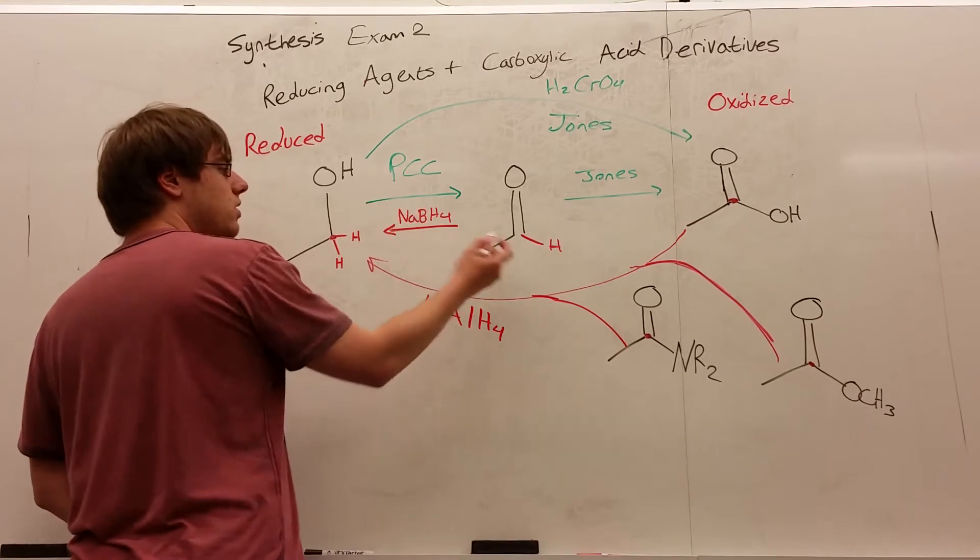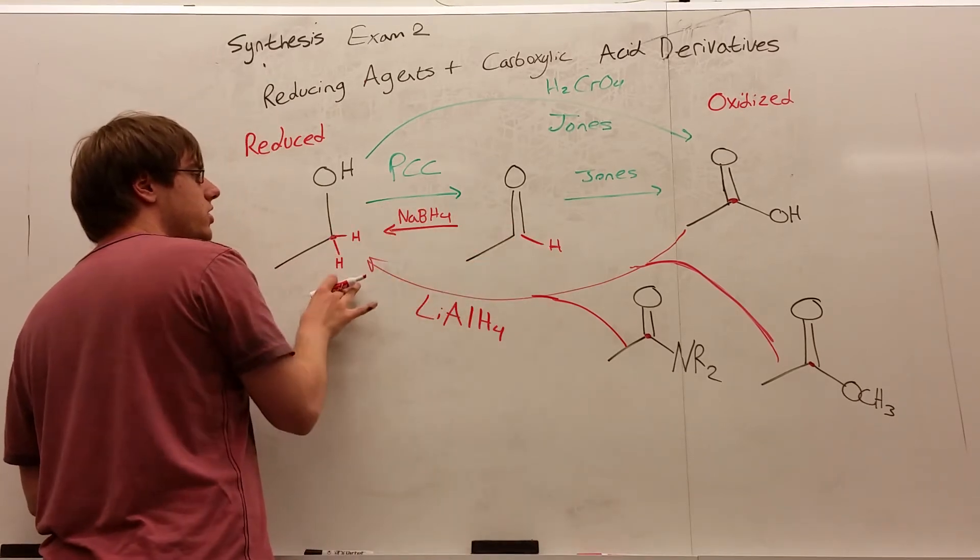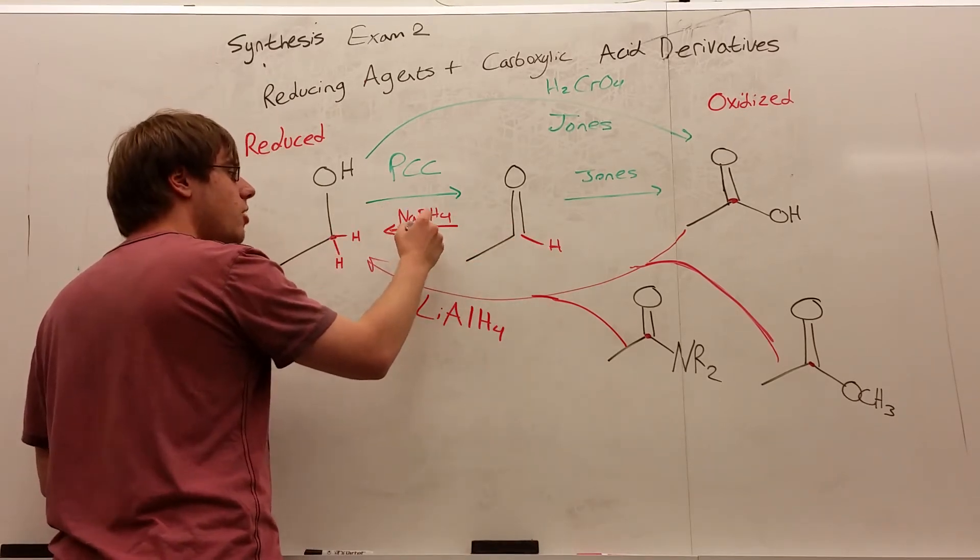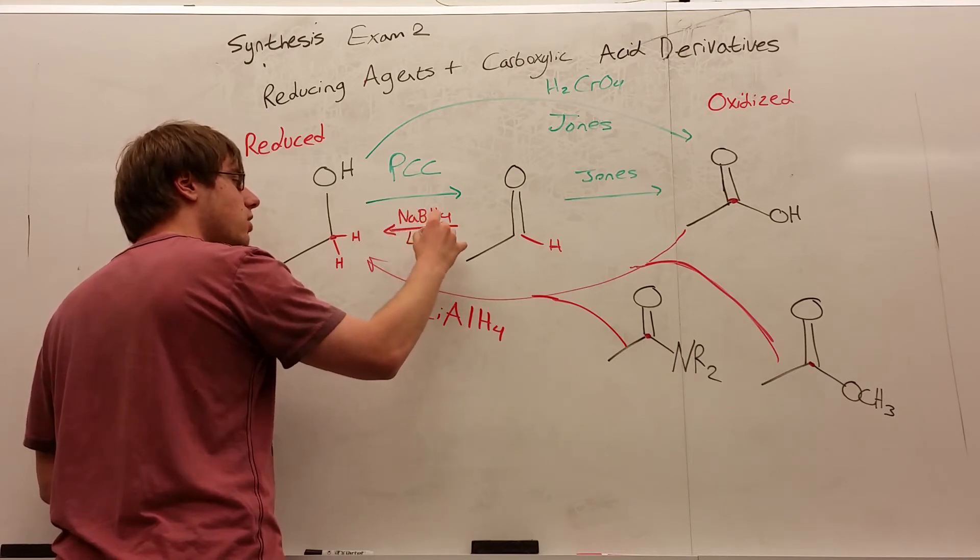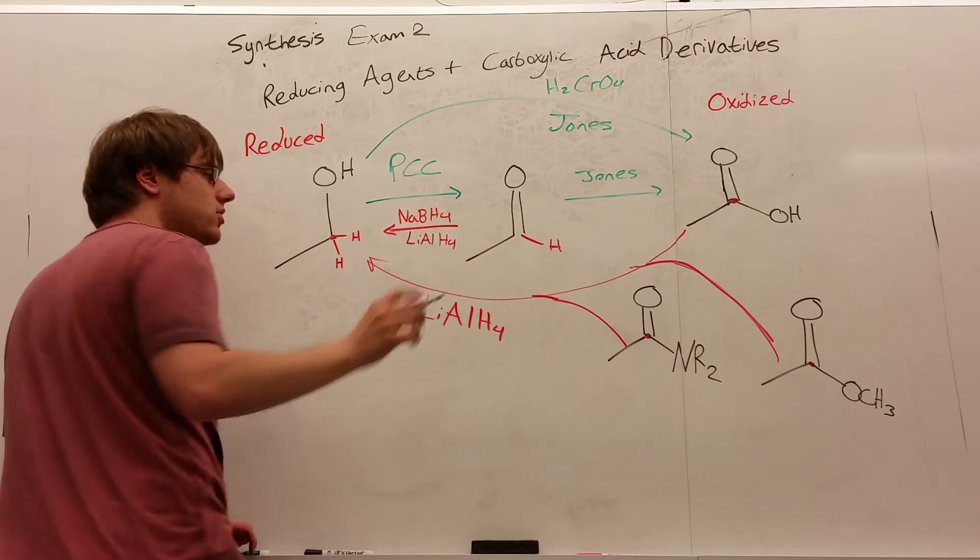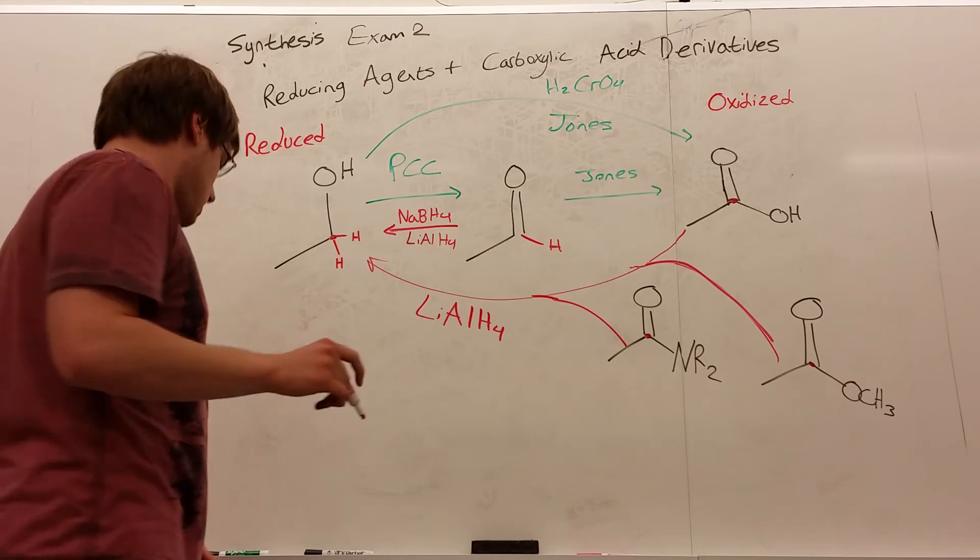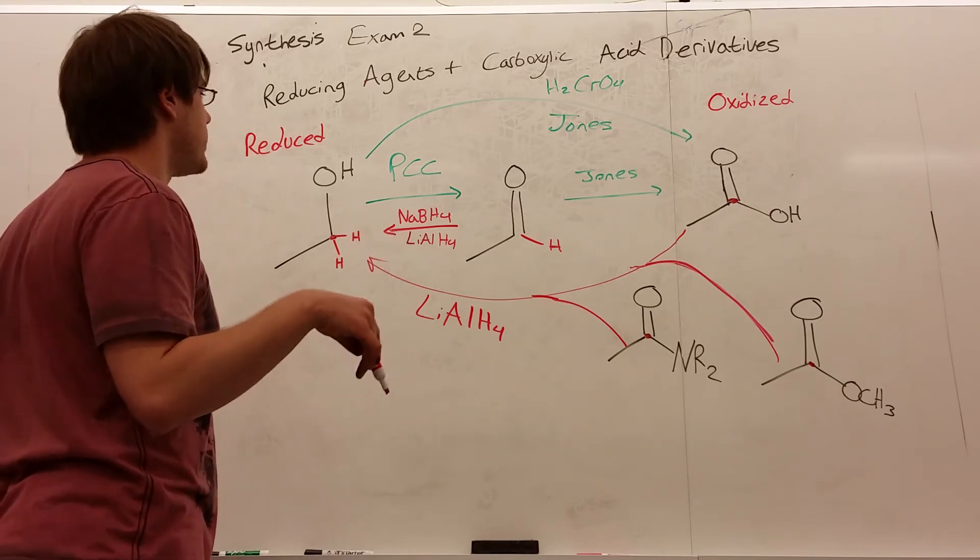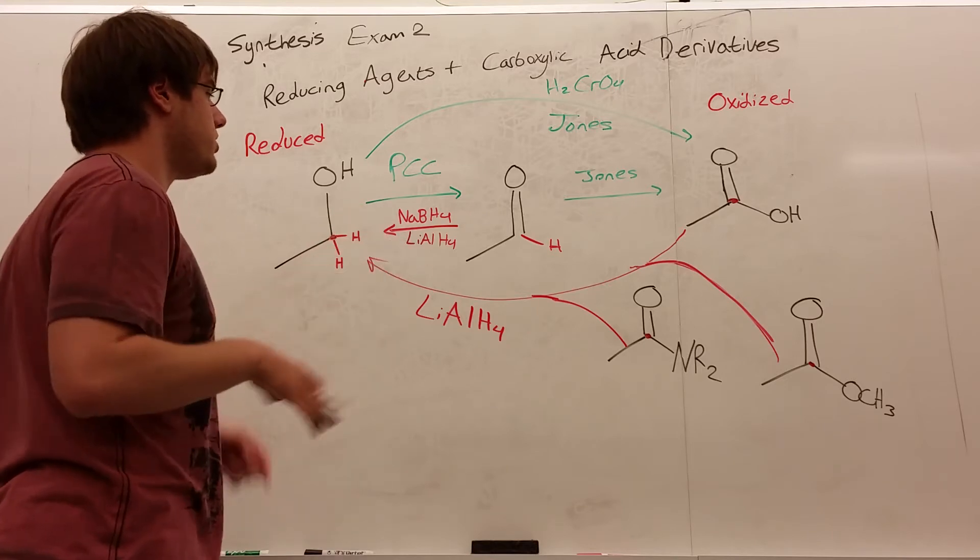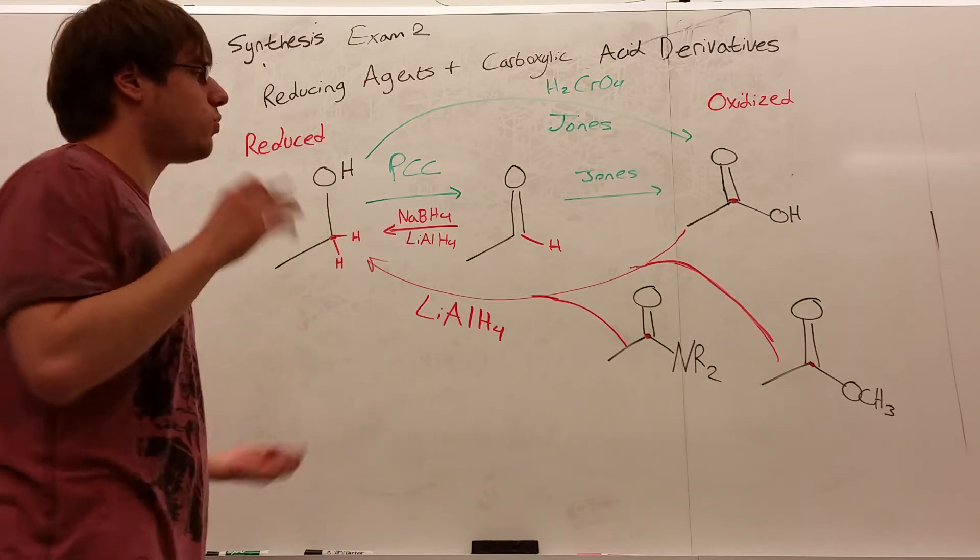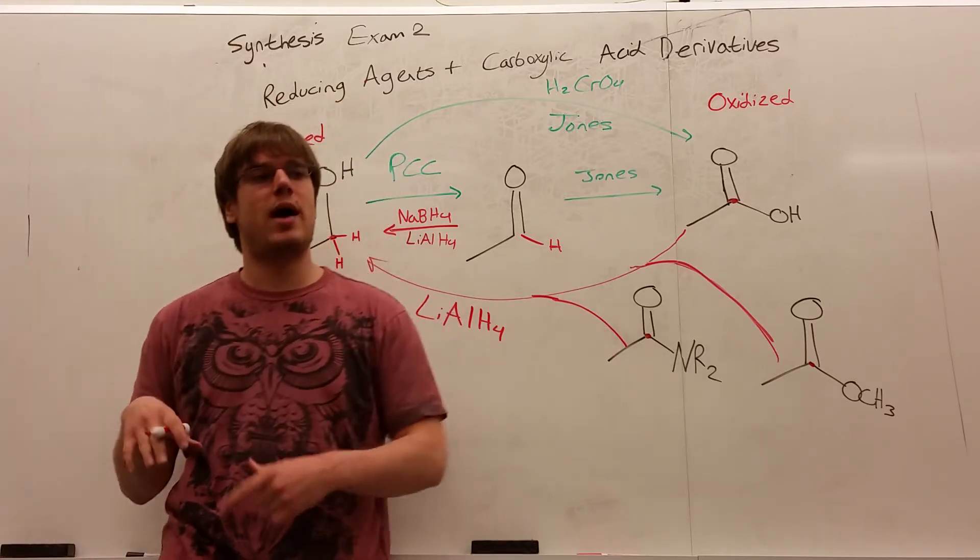Now, so if you take a carbonyl and want to turn it into an OH, yes, NaBH4 will work, but you could also use LiAlH4 because it turns everything into OH if it can. And anything else you want to say on that? I think that's it for the general reducing oxidizing agents, but there's one more special one, DiBALH.